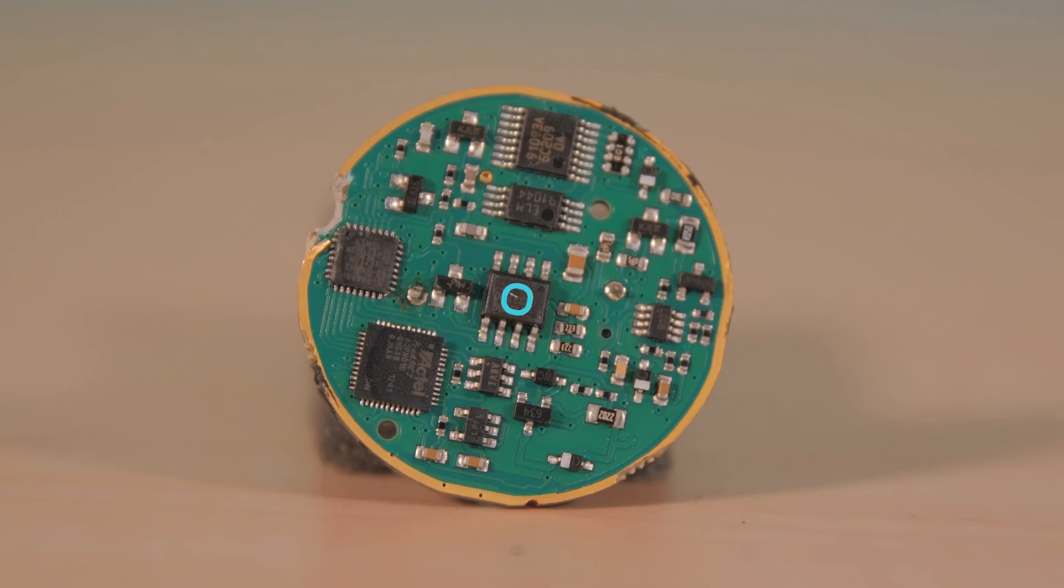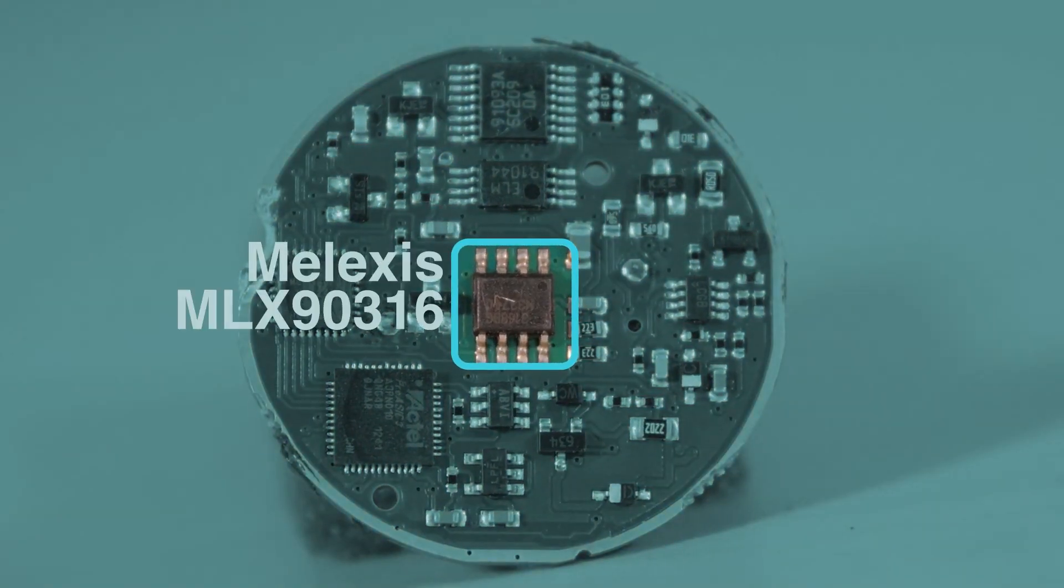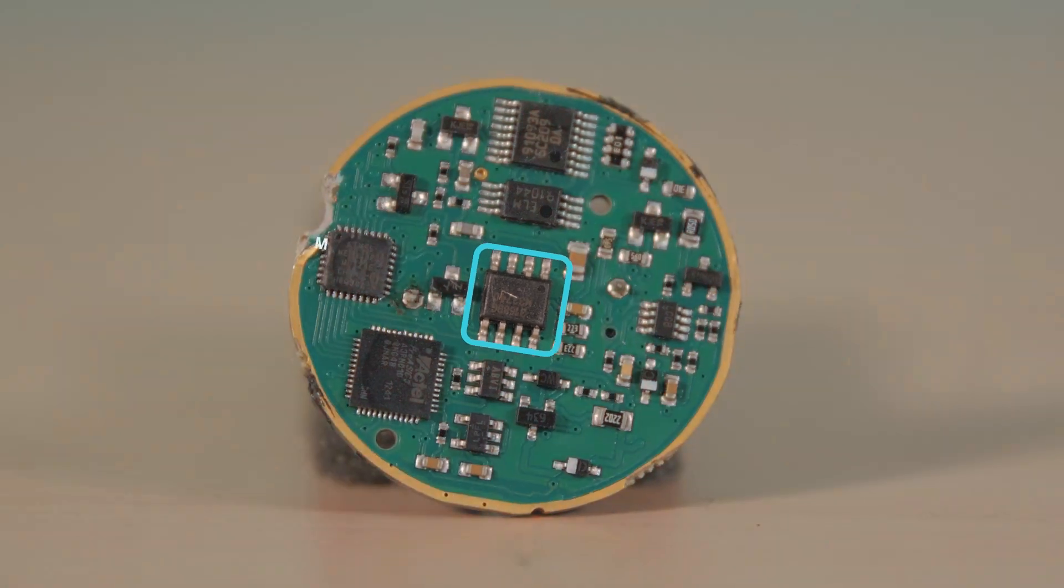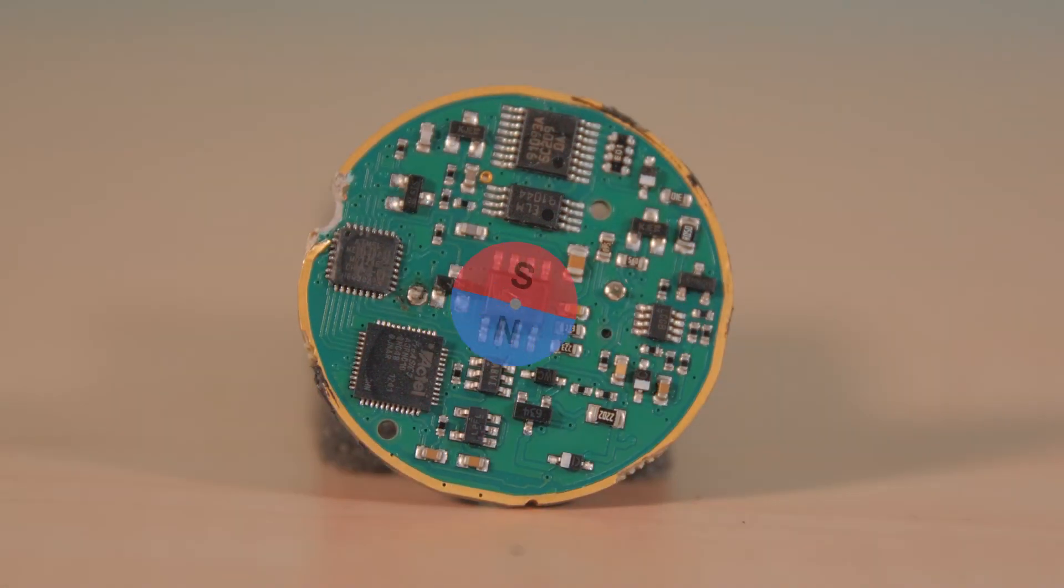The answer is found on the other side of the PCB. There, right in the middle of the board, is a special Hall sensor IC from Melex in Belgium.